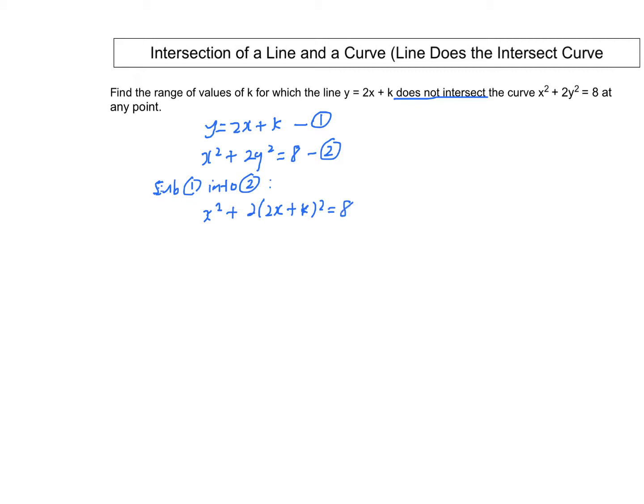Now, expanding this, we will have 9x² + 8kx + 2k² - 8 = 0.